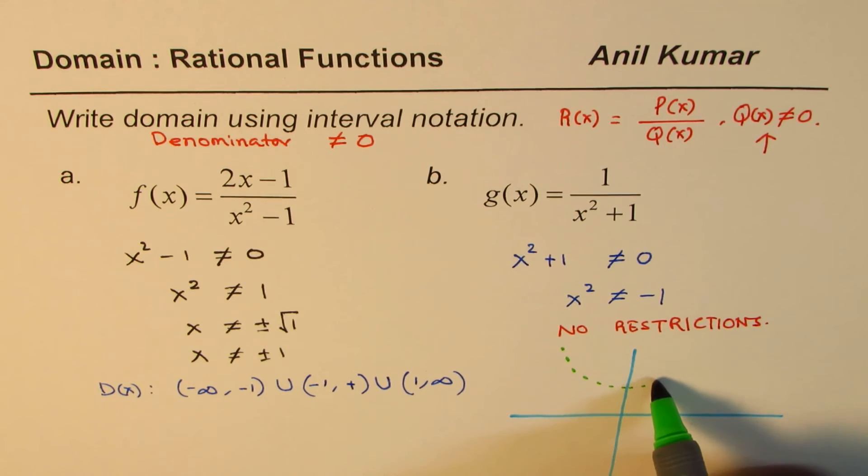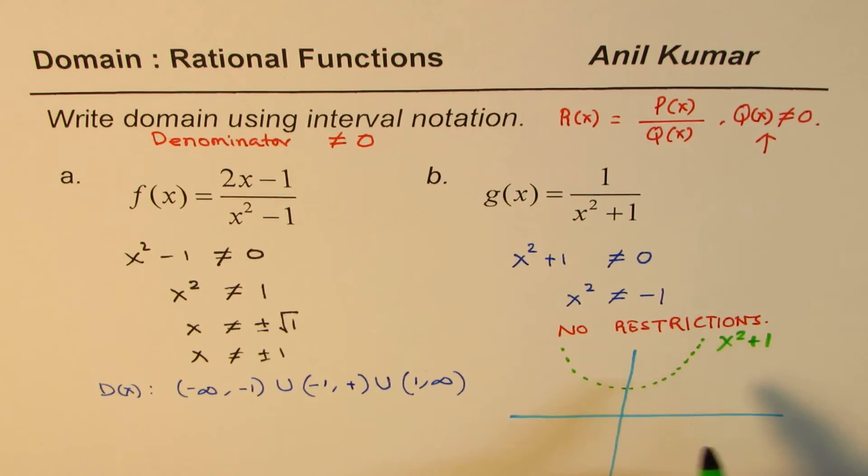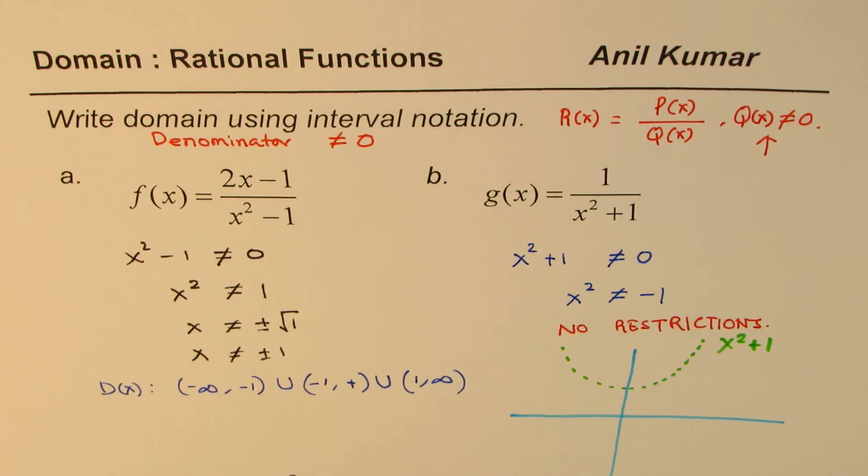Which is kind of like this. So you see that this graph of x square plus 1, it doesn't have any x-intercept. It does not cross the x-axis. So therefore, it has no restriction.